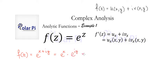But then this is equal to e to the x times cosine y plus i times sine y. And distributing the e to the x,